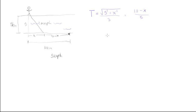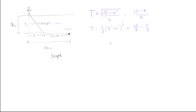Now we want to differentiate this, so let me rewrite it in a cleaner form. We can write it as one-third times (5² plus X²) to the power of one-half, plus 10 over 5, minus X over 5. The constant term separates out nicely.